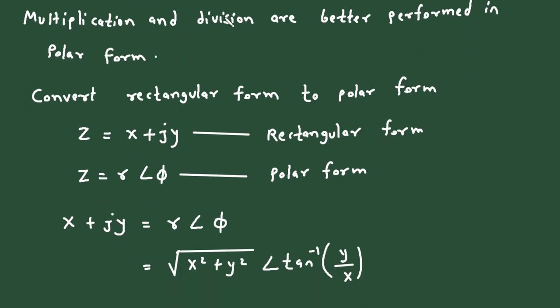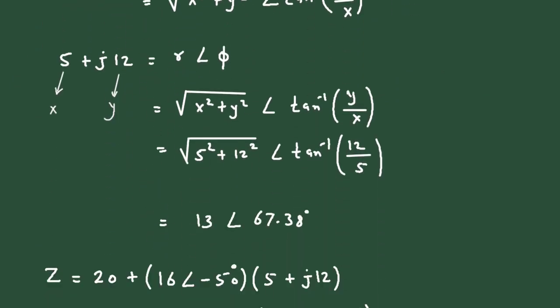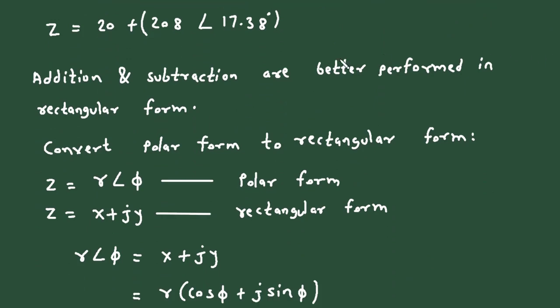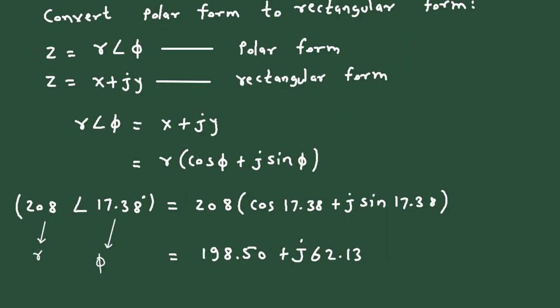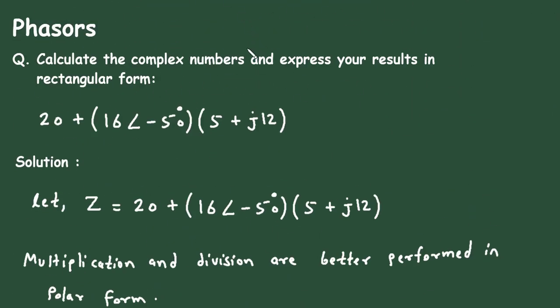This is how we can simplify complex numbers. We convert rectangular to polar form because multiplication and division are better performed in polar form, and convert back to rectangular form because addition and subtraction are better performed in rectangular form. Don't forget to like, share and subscribe to this channel — thanks for watching.